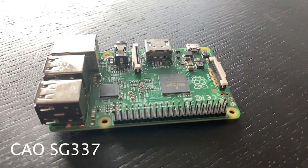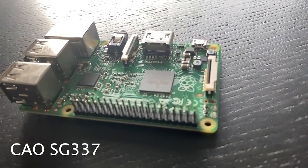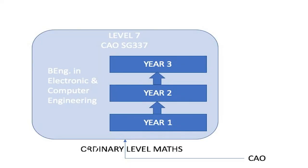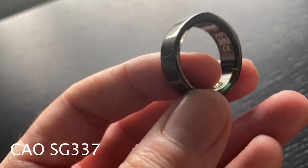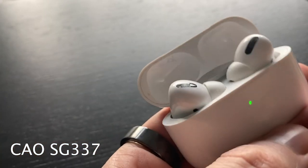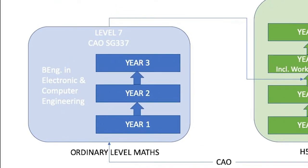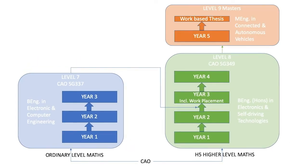If you are interested in technology or engineering, but are not doing higher level maths, why not consider our level 7 in electronic and computer engineering? This is a three-year program that looks at the design and development of embedded electronic systems. These are the medical devices that keeps us healthy, the consumer devices that keeps us entertained, or the controlled systems that keeps us safe on the road. You can then progress onto the level 8 in electronics and self-driving technologies and from there to the masters. Check out the link below for more information.